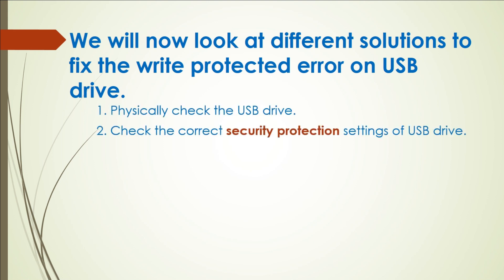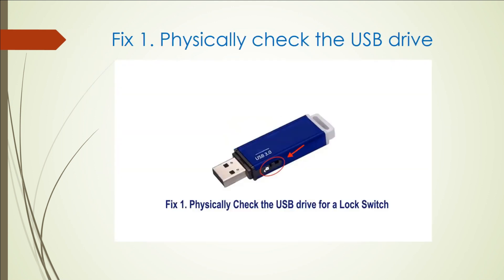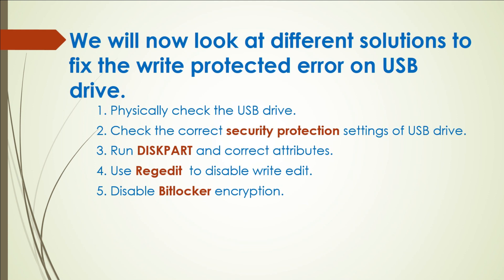To recover from this problem you can: physically check the USB drive, check the correct security option, use diskpart command, record settings, or check the bit logger. First, physically check the pen drive — there may be a lock switch on it. The remaining five options require spending a lot of time and may or may not work.